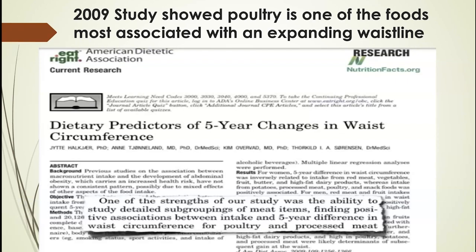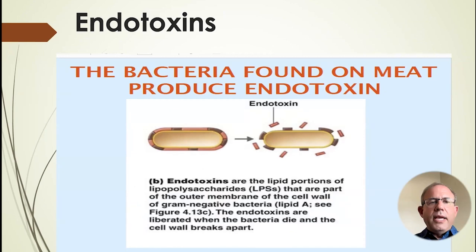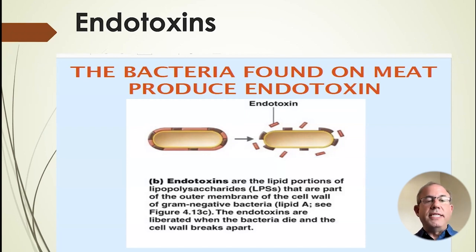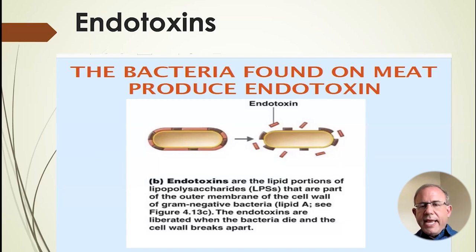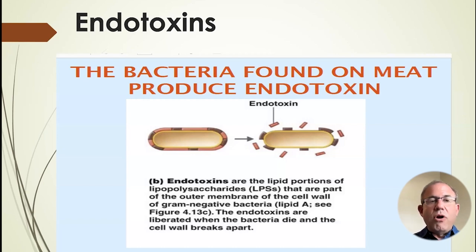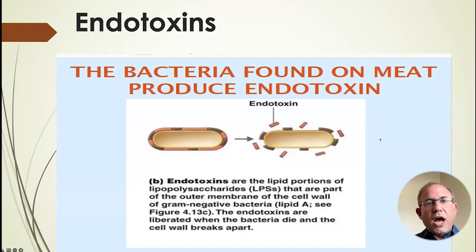Here's another example: something called endotoxin, or the long name LPS — lipopolysaccharides. 'Lipo' is a fatty toxin that surrounds gram-negative bacteria, which are in eggs and in our GI tract. Even organic meat is not grown in a sterile environment, so you're being exposed to this endotoxin when eating meat. You might say, 'I cook my meat' — the problem is endotoxin is heat stable; it'll still be in your body after cooking.